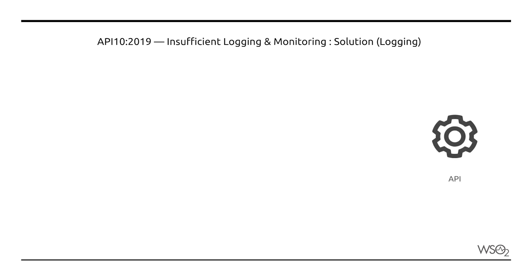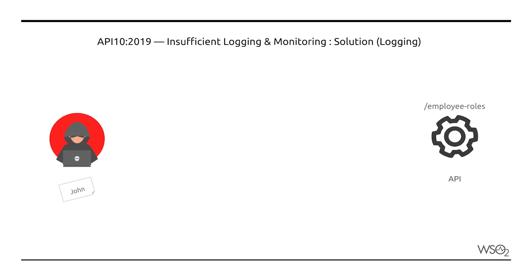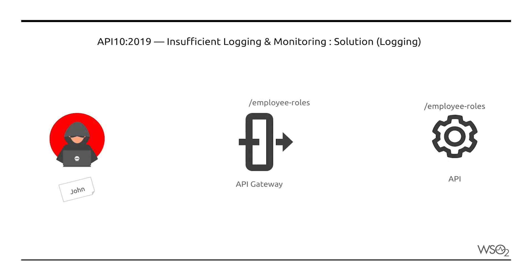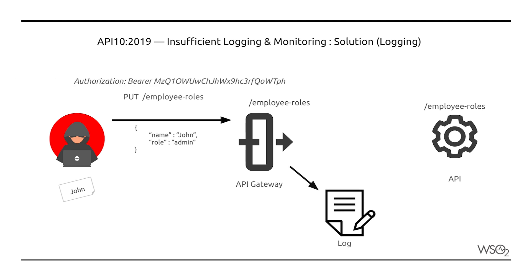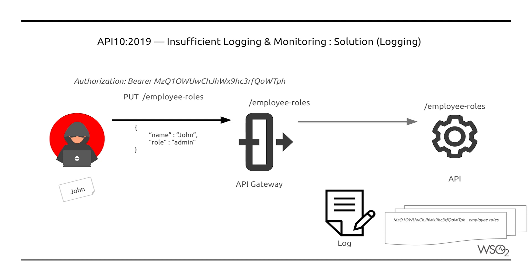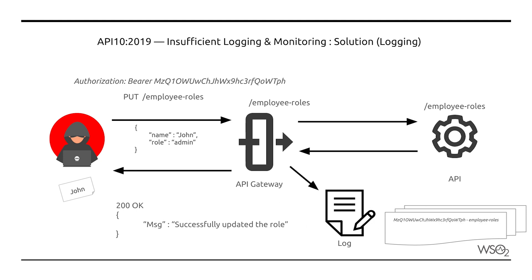When API traffic is exposed via an API gateway, API requests and response metadata can be logged centrally. These logs can be investigated in this scenario to filter out what requests have been performed by the stolen access token, revealing the extent of John's infiltration.